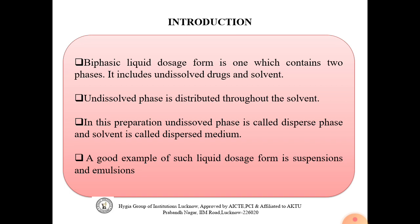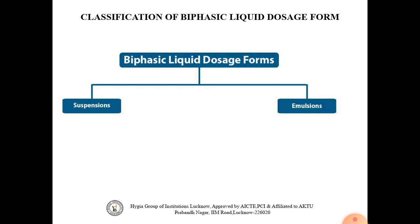The solvent is called the dispersed medium, and the drug particles being added to the formulation are called the dispersed phase. Good examples of such biphasic liquid dosage forms are suspension and emulsion. These are the commonly used biphasic liquid dosage forms. Biphasic liquid dosage forms are divided into two parts: suspension and emulsion.